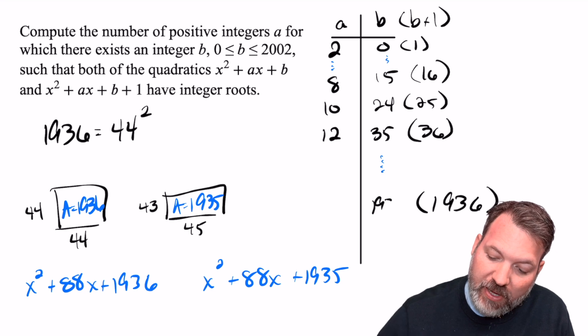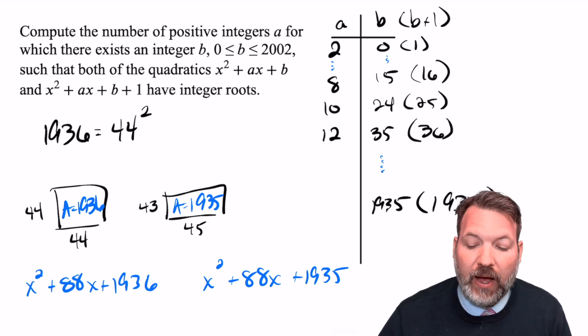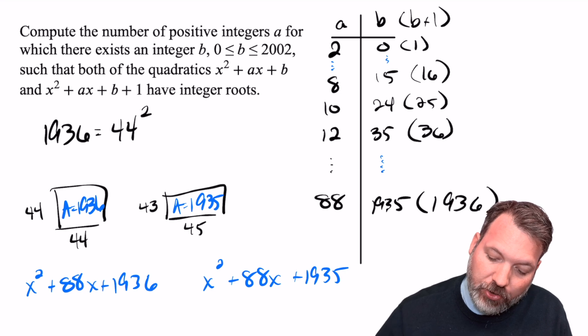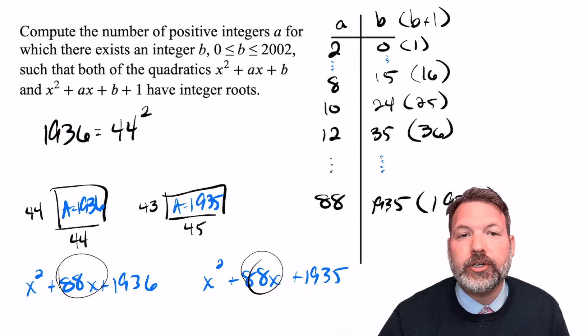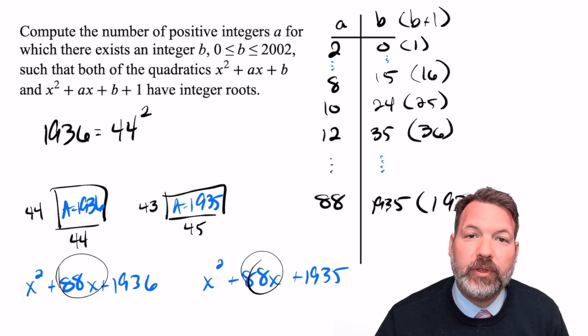And so that would be my B value here, 1935. And again, the A value in that case would correspond to the 88, that linear term in the middle that is the same in both cases.